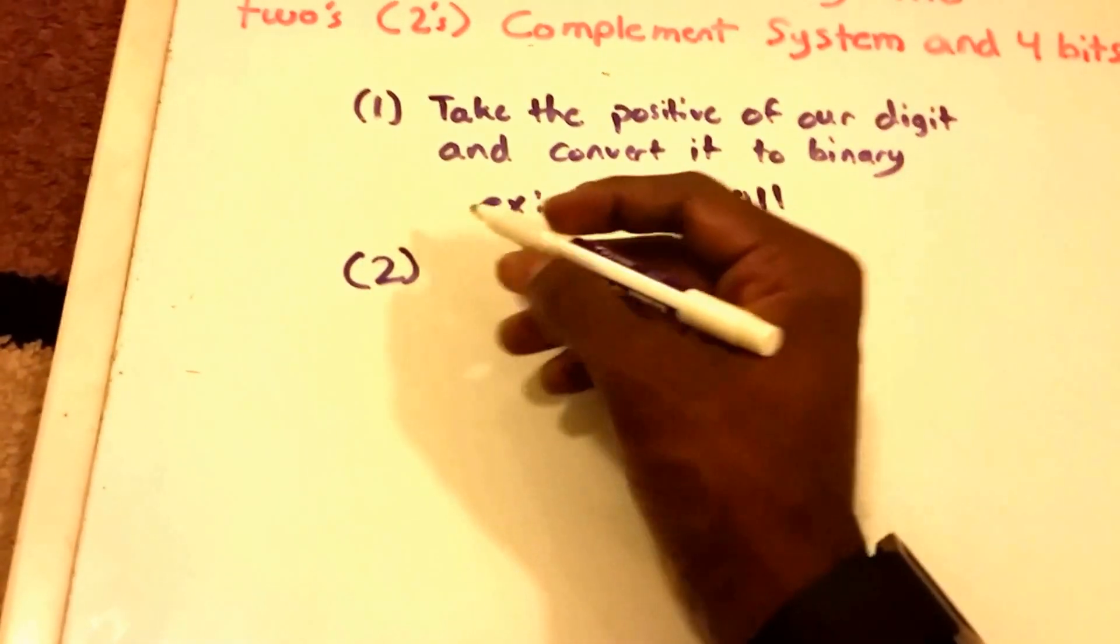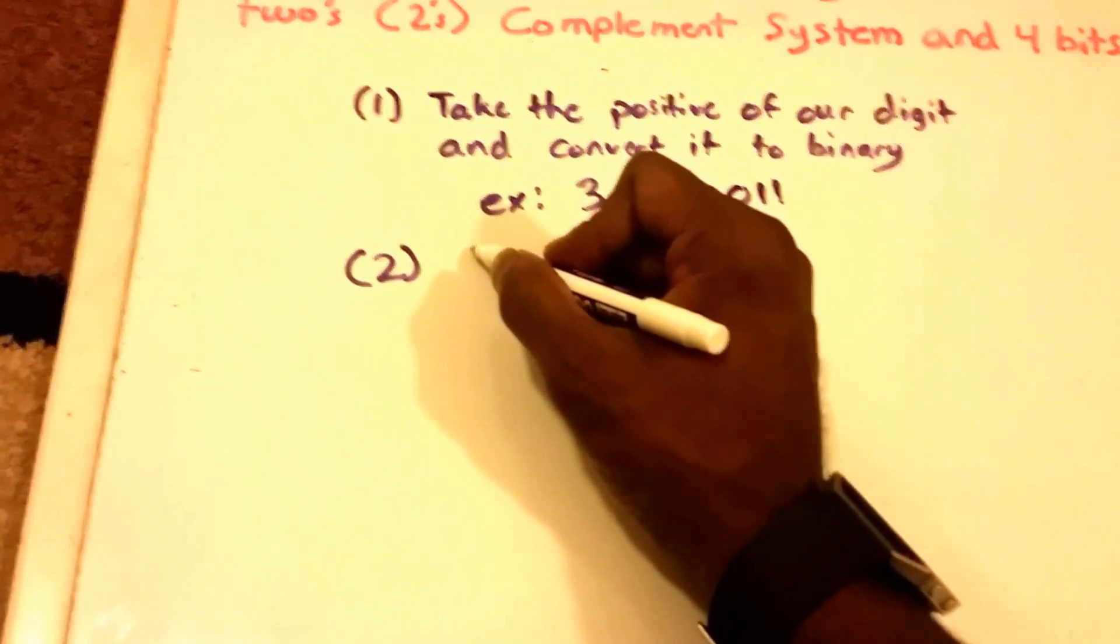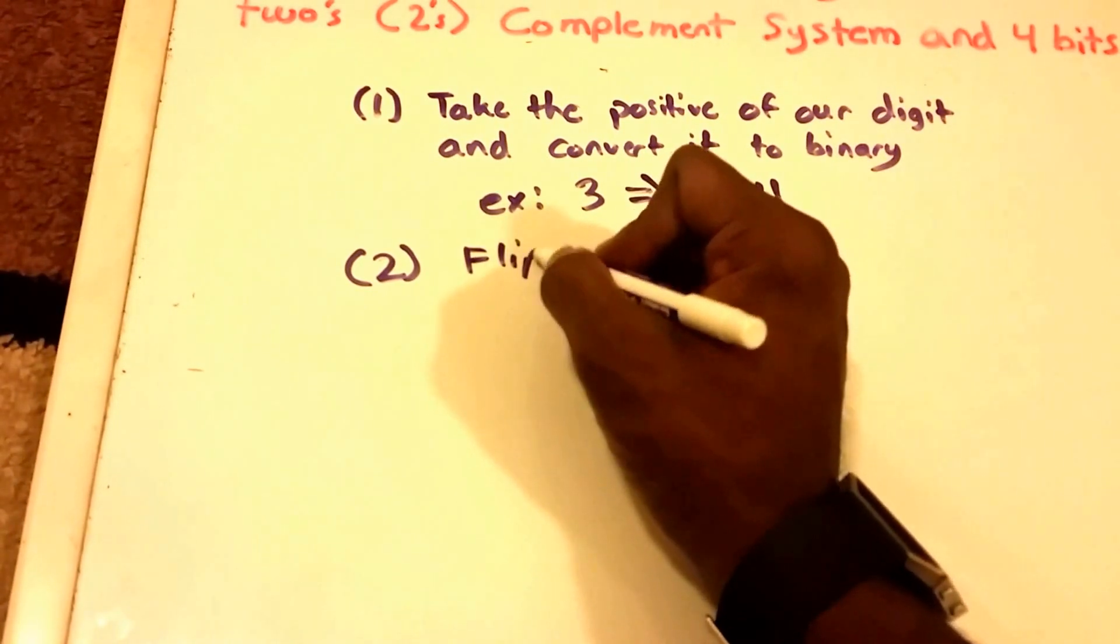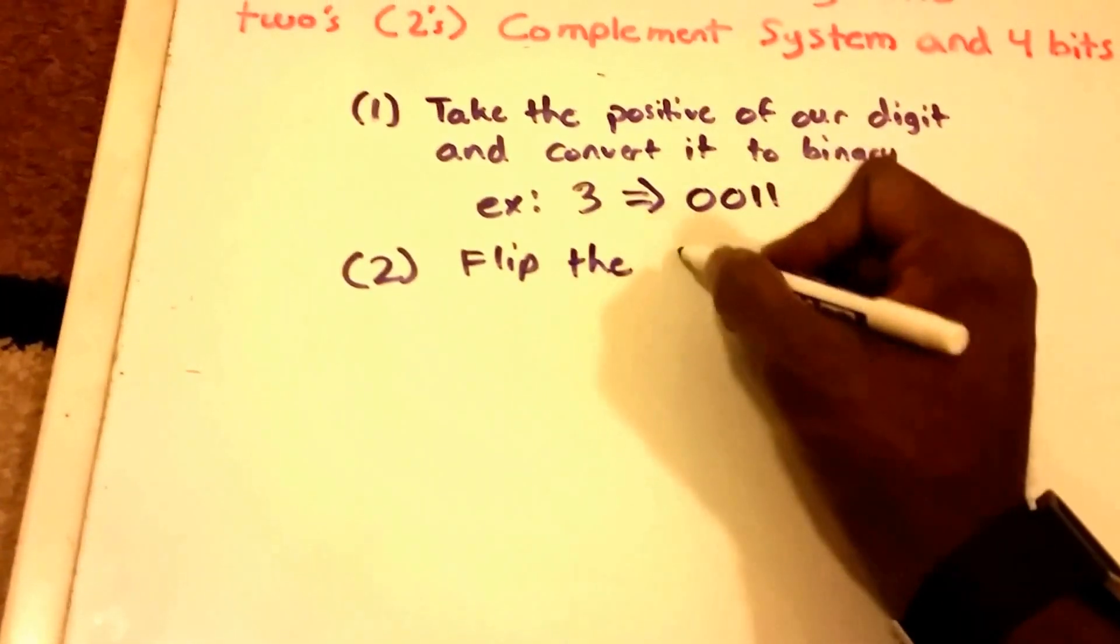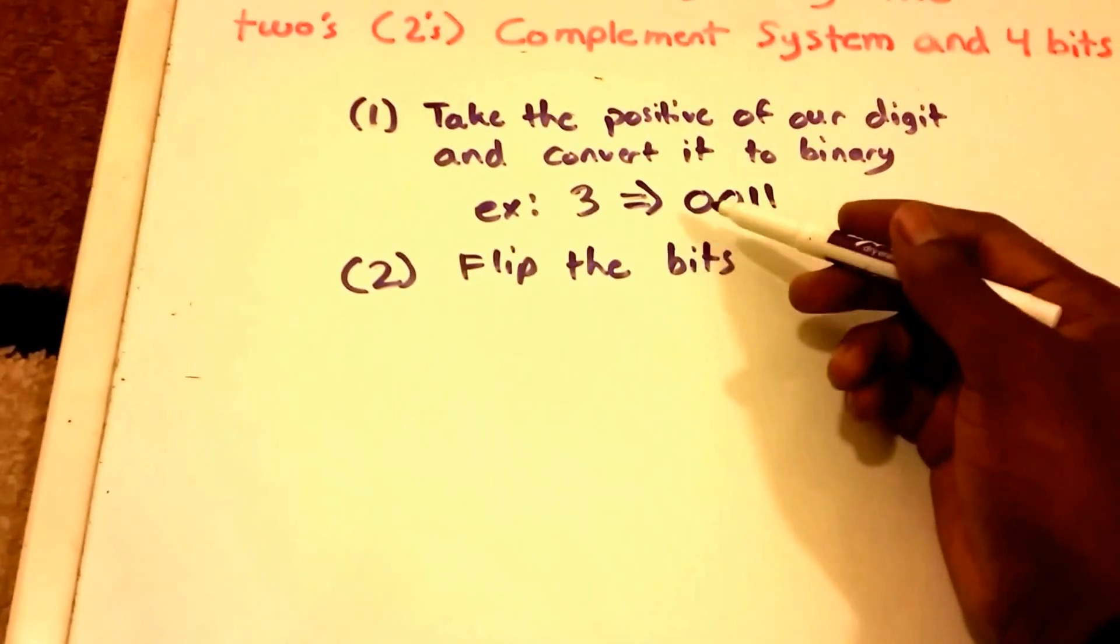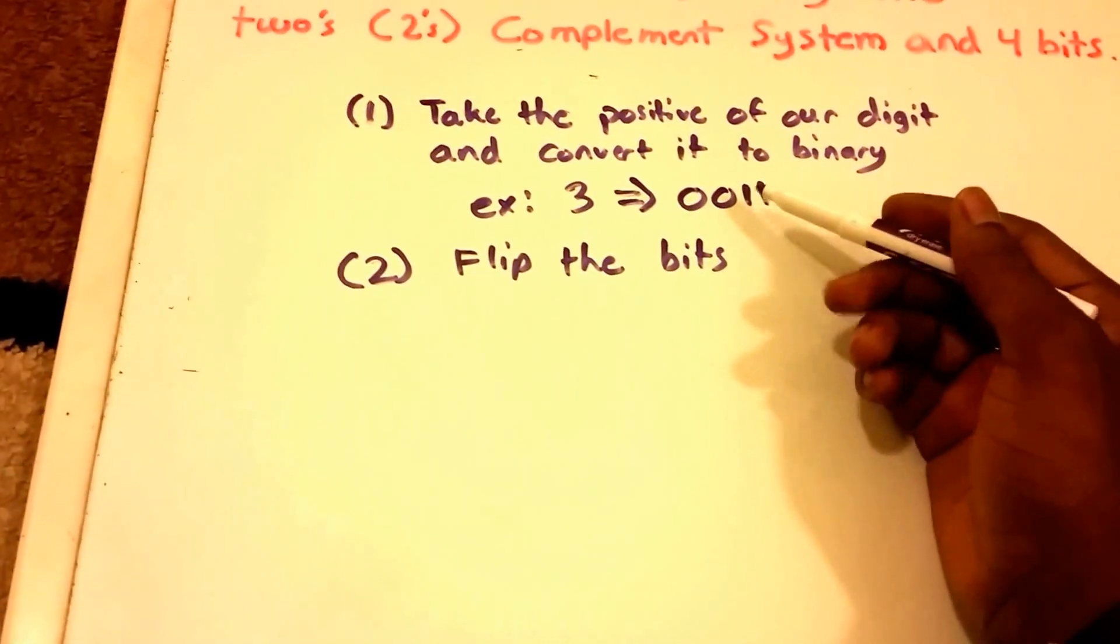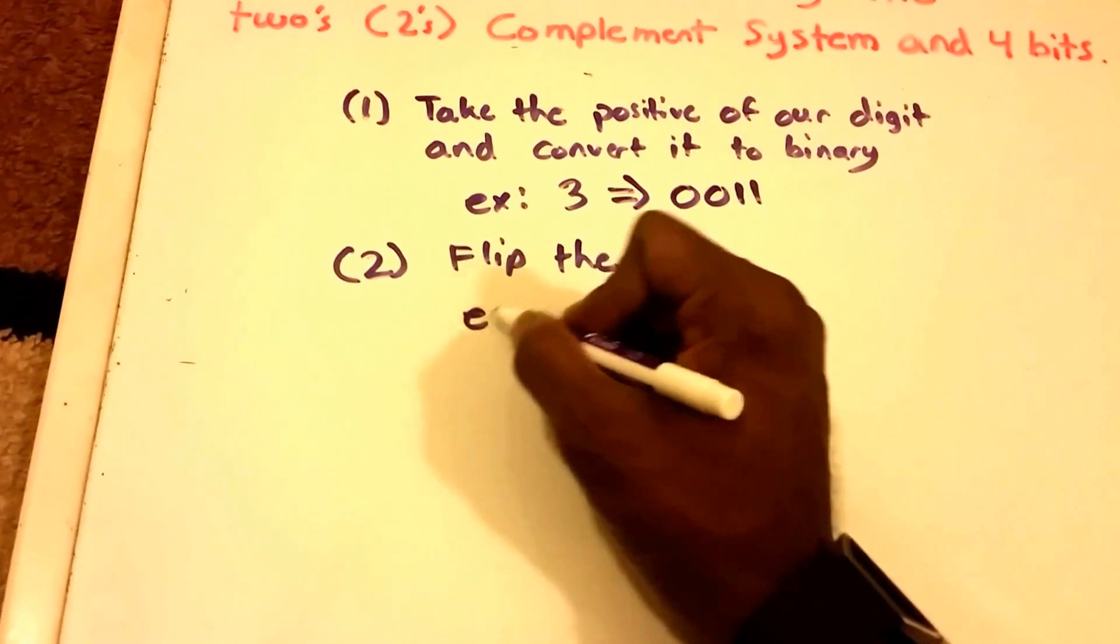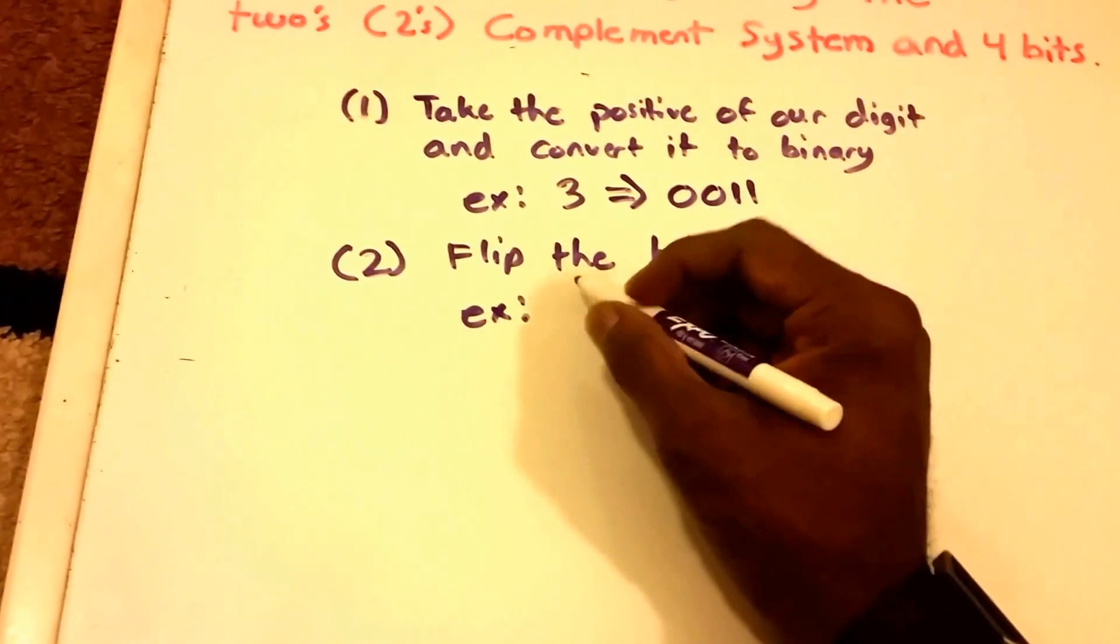And then we have step two. Step two, we're going to flip the bits. Now what that means is that we're going to change every zero into a one and every one into a zero. So let me show you here.